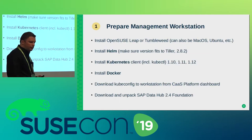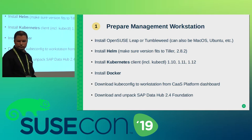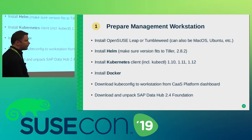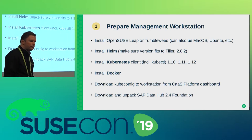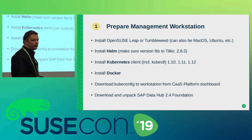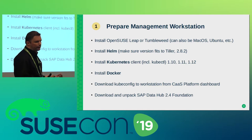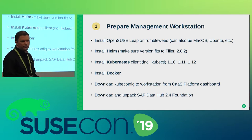The management workstation can be Linux or macOS — we prefer Linux, and please use openSUSE or Tumbleweed. On it you need several additional components: Helm, which is the companion to Tiller — an orchestration solution for Kubernetes; a Kubernetes client required by the SAP Data Hub installer; Docker; the kubeconfig downloaded from the CASP platform dashboard to make your workstation aware of the Kubernetes configuration; and the SAP Data Hub 2.4 Foundation package, which is a ZIP file downloaded from the SAP Launchpad containing an install.sh script.